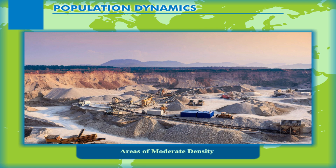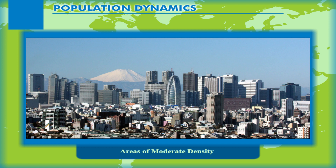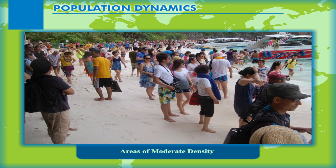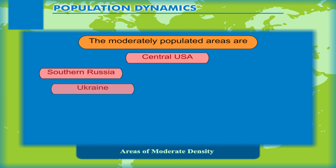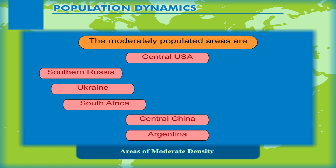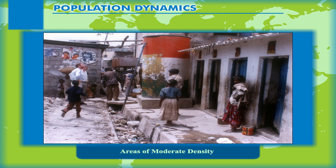Mining, industrialisation and improved infrastructure have made areas of moderate density attractive for people to settle. The moderately populated areas include central USA, southern Russia, Ukraine, South Africa, central China, Argentina, coastal parts of South America, Central America, South East Australia, and the Deccan Plateau in India.